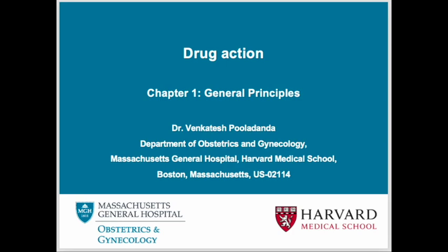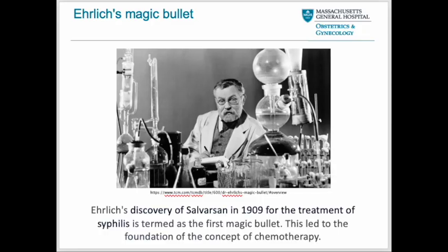The emergence of pharmacology as a science came when the emphasis shifted from describing what drugs do to explaining how they work. We should gratefully acknowledge Paul Ehrlich, a German scientist who discovered Salvarsan in 1909 for the treatment of syphilis — a sexually transmitted disease showing rash-like symptoms on the genitals, mouth, and skin. He termed it the first 'magic bullet,' which eventually led to the foundation of the concept of chemotherapy.